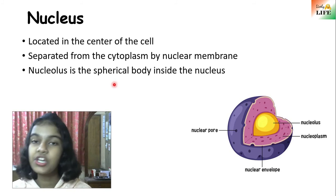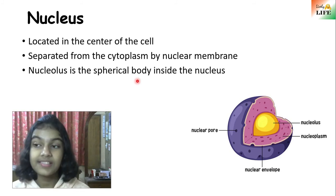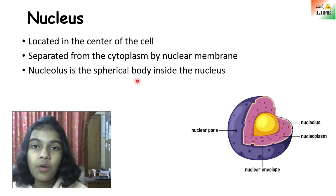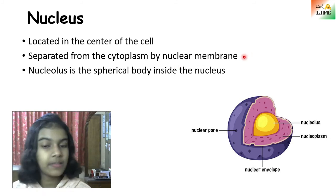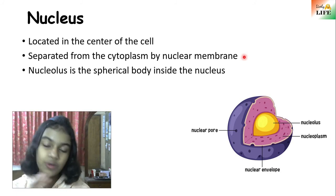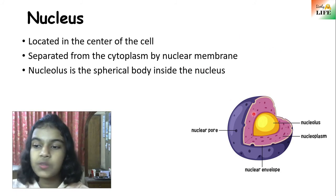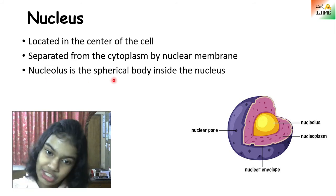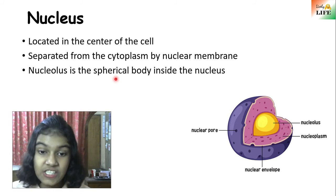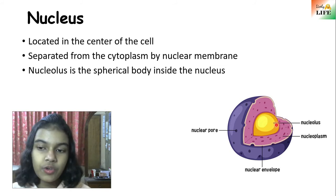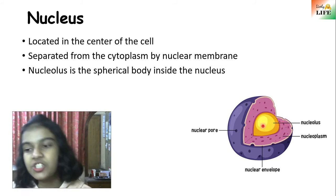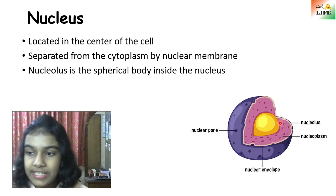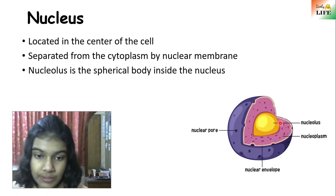The nucleus is spherical in shape and helps in protein synthesis. Nuclear membrane, like cell membrane, also allows certain substances to pass through it. The nucleolus is also generally spherical in shape and helps in the synthesis of protein. If you observe through a microscope with higher magnification, you will be able to see the nucleolus.